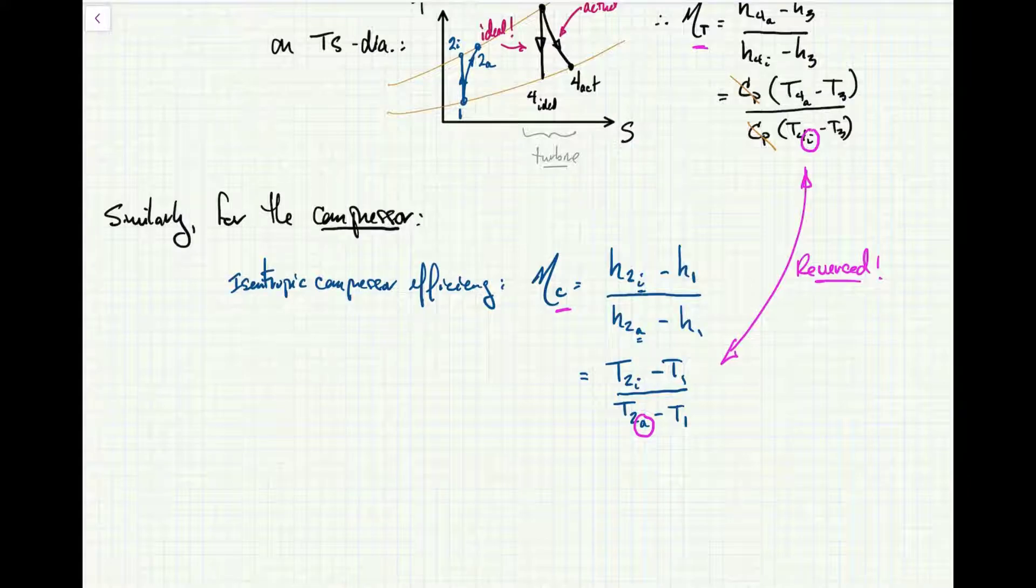So that's it. Those are three important performance parameters for gas turbine cycles: the thermal efficiency of the gas turbine cycle itself, which is equation 2 above, and the isentropic efficiency of both the turbine and the compressor. Hope you've enjoyed this video. Take care and have a nice day. See you next time.